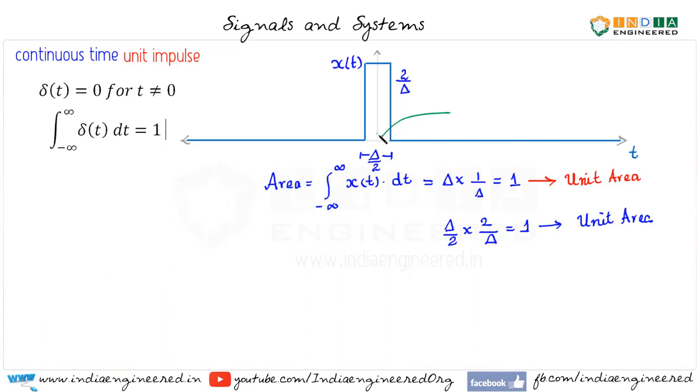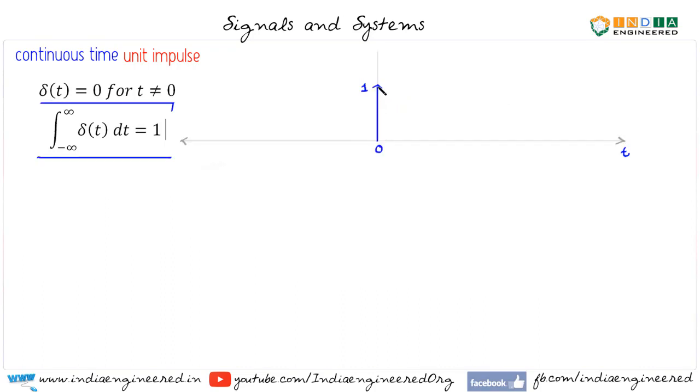So when this width decreases, the height has to increase in order to maintain the unit area. So when this width tends to zero, the height should go to infinity. So that's what our unit impulse is. Let's see the unit impulse again. Now this arrow is indicative of the fact that it tends to infinity. Now this one indicates the area under the curve. That is the area under impulse.